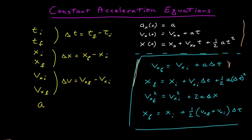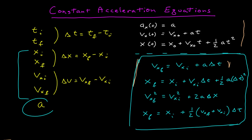Here we have four really handy relationships that connect the positions and velocities at two specific points in time, under the assumption that the acceleration is constant. There are only two pieces of information contained in the first two expressions. However, if you don't know anything about time, the third equation might be a place to start, and if you don't know anything about acceleration, the fourth may be a place to start.